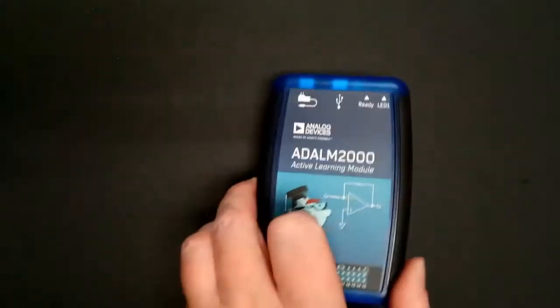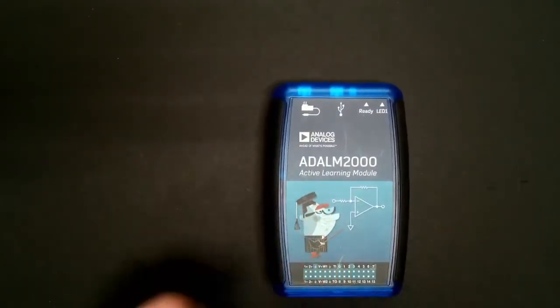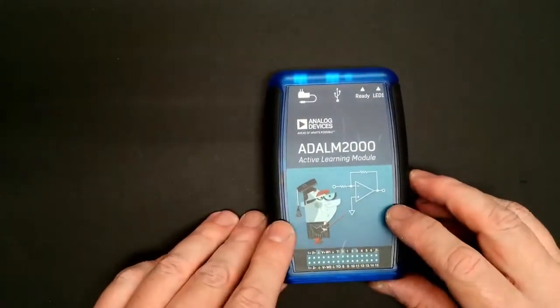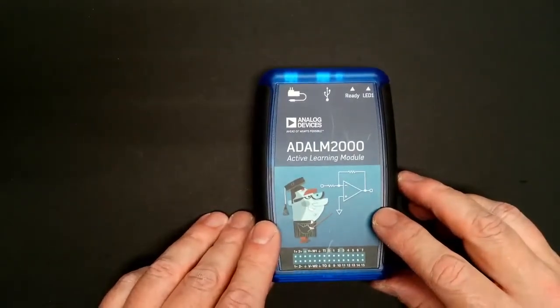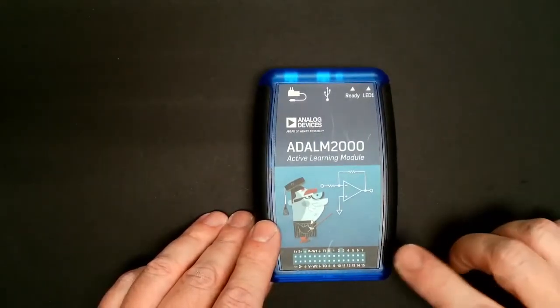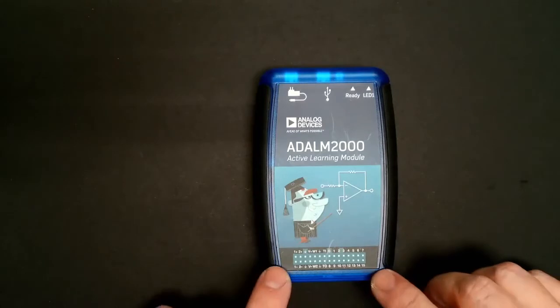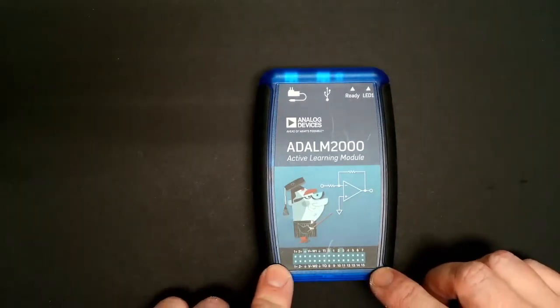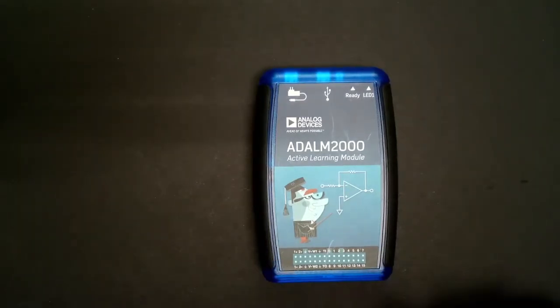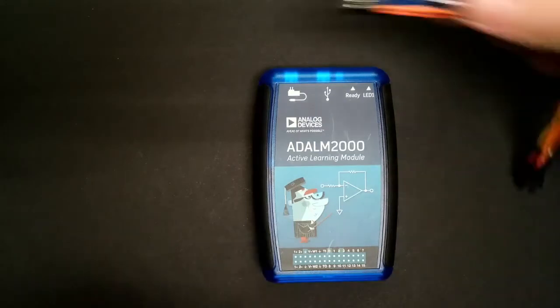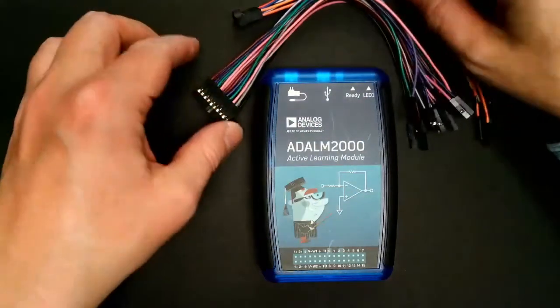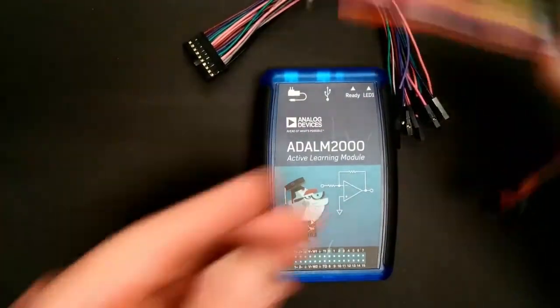First let's wire up the M2K. In an earlier short video I showed you how to load the drivers, load the software, just basically get it up and running. It comes with two sets of connector wires to connect to your circuit.